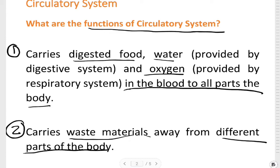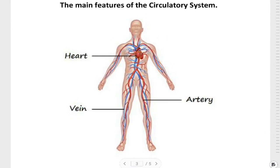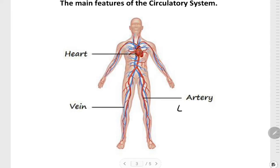Next page. Here are the main features of the circulatory system. Heart is a pumping machine which pumps blood, and the artery is where you pump oxygen-rich blood, and the vein... artery carries oxygenated blood. Hope you understand this picture.